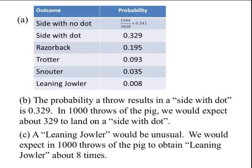Part C, a leaning jowler would be unusual. It is less than 5%. We would expect about 8 leaning jowlers out of 1,000 throws, so that would be unusual.